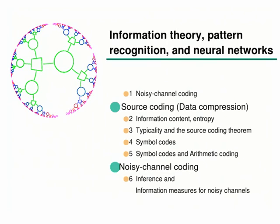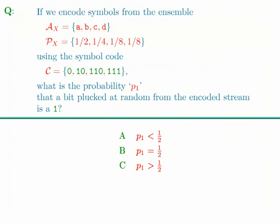Let me start with a little question I set for you last time. The question is about this ensemble ABCD with probabilities one half, a quarter, an eighth, and an eighth, and with the symbol code shown. The question is: if we are encoding from this source and then we reach into the encoded stream and pluck out one bit, what's the probability that it's a one?